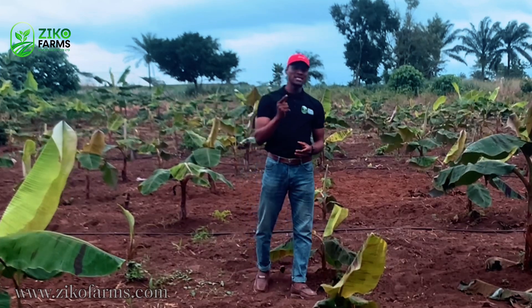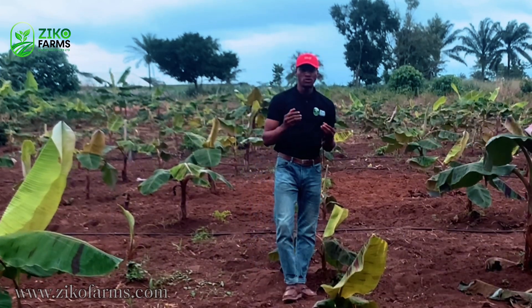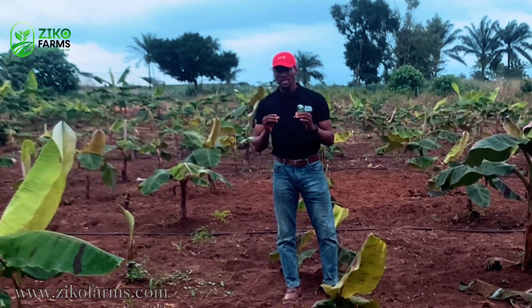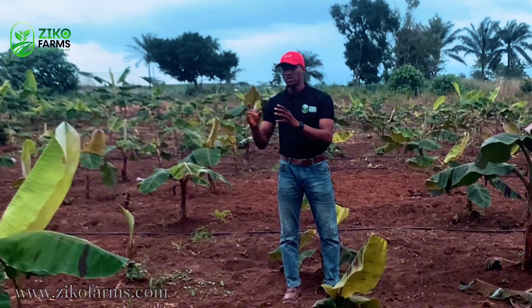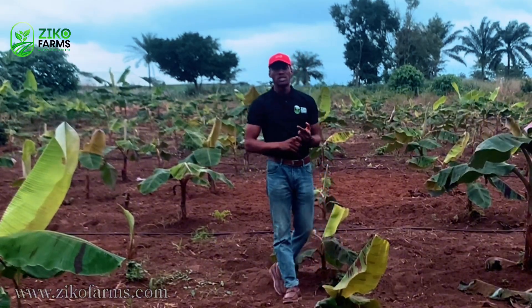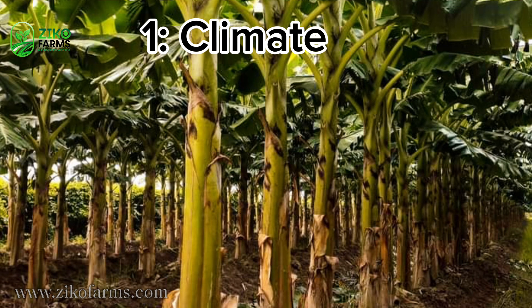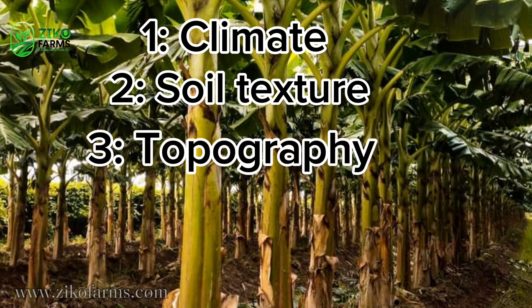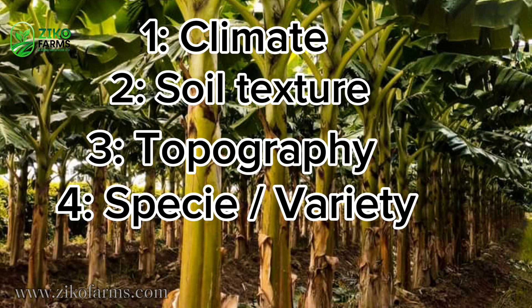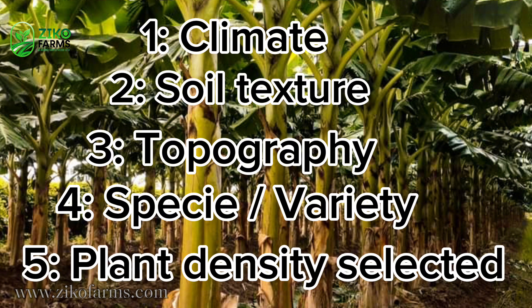You need to understand that for you to use these planting methodologies, particular factors have to be considered: number one is the climate, number two is your soil texture, number three is your topography, number four is the species of plantain or banana you are planting, and number five is the density of the plantation.